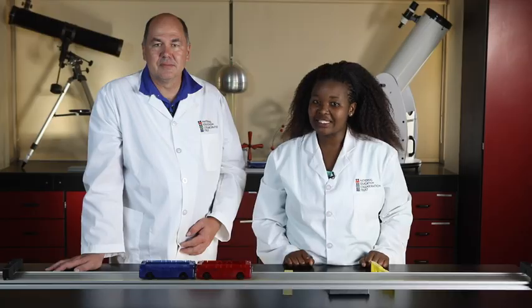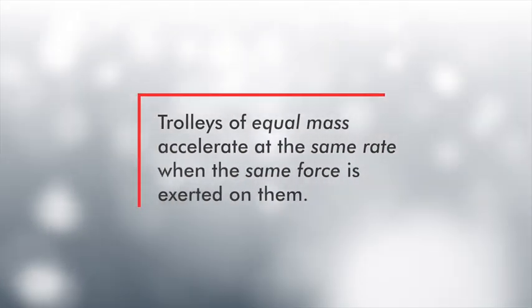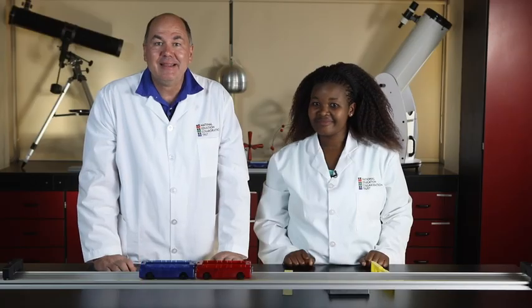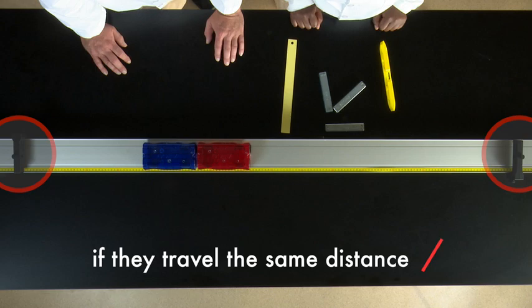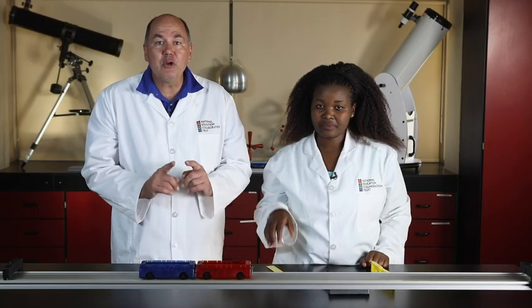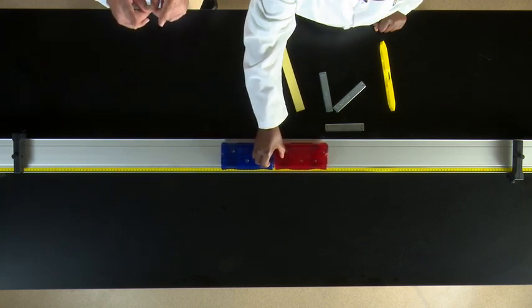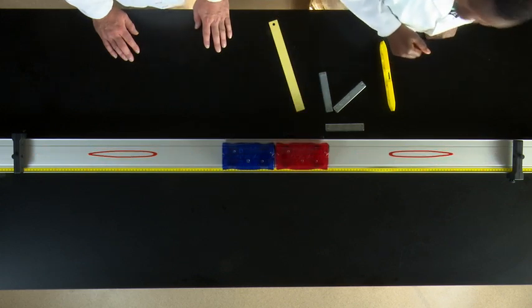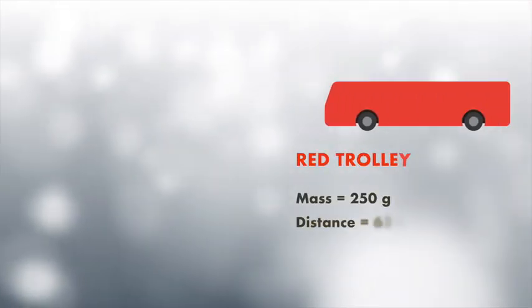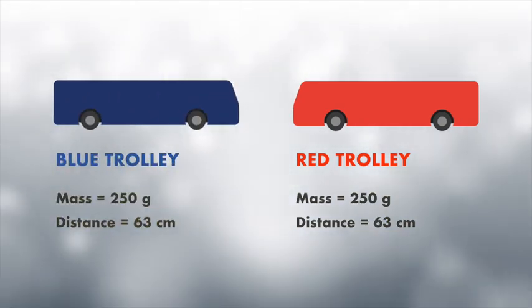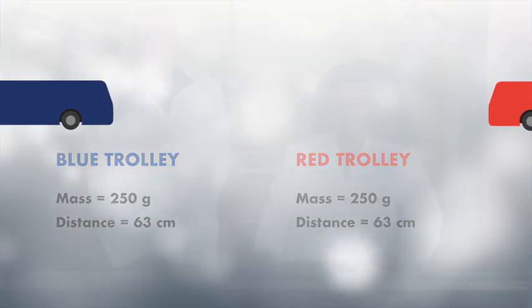We have to get these trolleys to explode apart from each other and to hit their stoppers at exactly the same time. Let's try it first with two trolleys of equal mass. It makes sense that trolleys of equal mass accelerate at the same rate when the same force is exerted on them — that is what Newton's second law tells us. So the two trolleys will have the same final velocity as they travel down the track in opposite directions. They hit the barrier at the same time if they travel the same distance. We position the two trolleys of equal mass in the center of the track. The mass of each trolley equals 250 grams. The distance of the red trolley to the stopper is 63 centimeters and the distance of the blue trolley to the stopper is 63 centimeters.